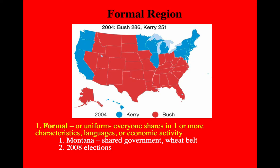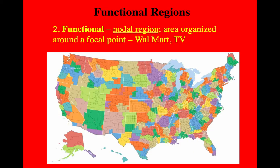Formal regions are probably the easiest of the three because it's just where everyone shares one common characteristic. It might be what kind of food they grow, like in Iowa — everyone's an Iowa farmer. Everyone grows wheat in Montana. Everyone in New England has a unique accent or dialect. Everyone in Alabama votes Republican. So it's a common characteristic. Remember, it's not going to be 100% pure, but they all share that common thing.